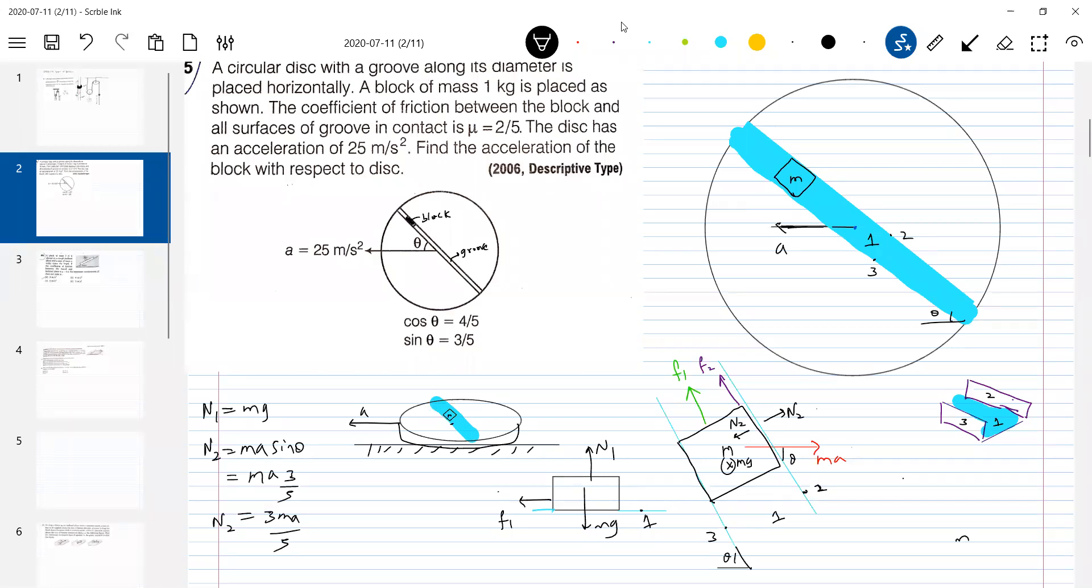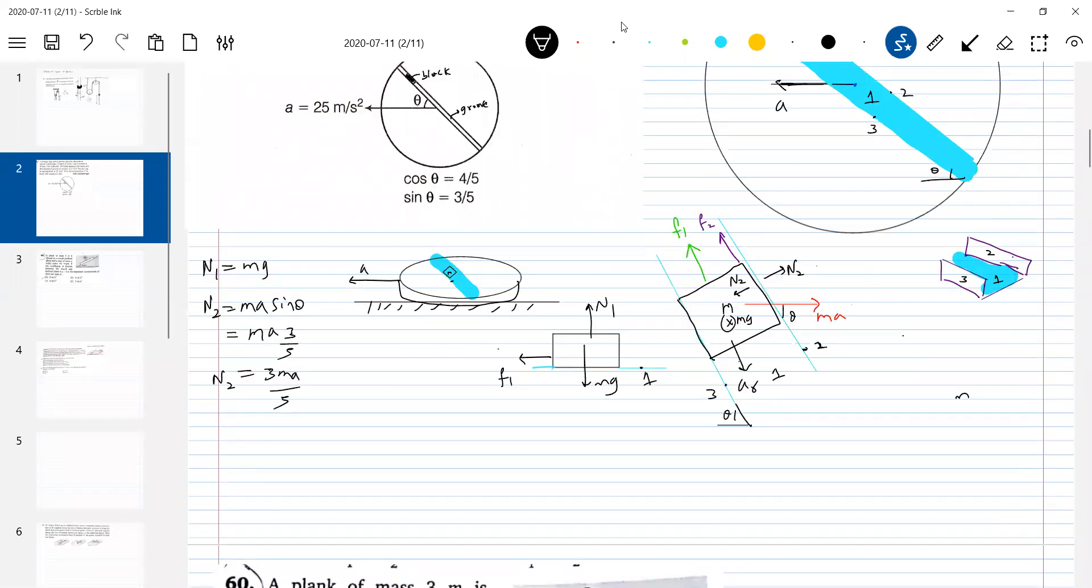Let's do one thing. Let's write equations of motion for the block here. Now what is the acceleration of the block? Ma cos theta minus F1 minus F2 equal to M times acceleration of the block with respect to disc. That's what he's asking. In what direction the block will try to move? In this direction. So this relative acceleration we are supposed to calculate. Okay, I'll slide down. Let's write the equation.